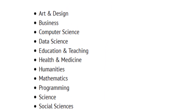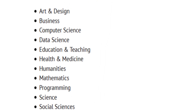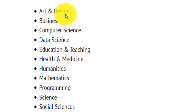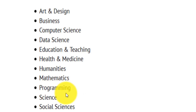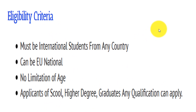Here is the list of Howard University courses. Basically 100 courses are available in different disciplines like art and design, business, computer science, data science, education and teaching, health and medicine, humanities, mathematics, programming, science, and social science.